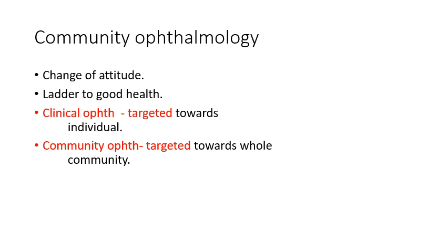You have to change the attitude. There is a ladder to good health. From an ophthalmological point of view, the upper rung of the ladder is 6/60 and the lower rung is 6/6. It means a person having 6/6 vision can go to 6/60, or a person having 6/60 vision from Snellen's chart — or counting fingers — can go up to a good quality vision. Anybody can go from diminution of vision to good quality vision. The ladder can take you up as well as down. Clinical ophthalmology is targeted towards an individual and community ophthalmology is targeted towards a whole community or group of people.